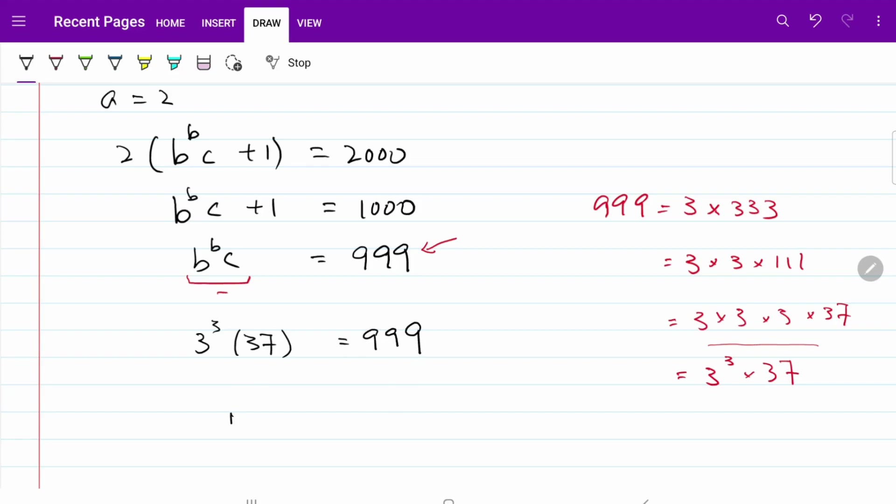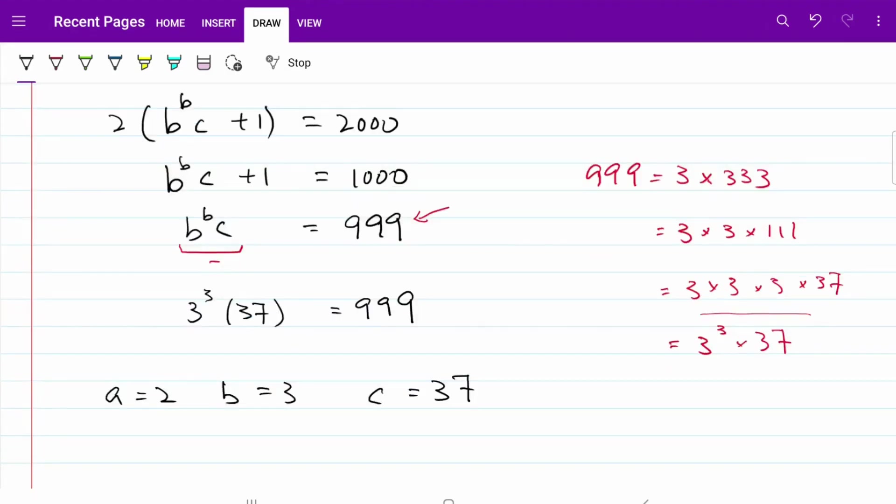So I can safely conclude that b is equal to 3, c is equal to 37. And don't forget our a is equal to 2. That's going to be our first combination.